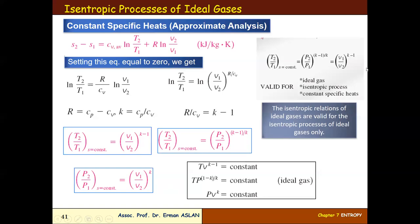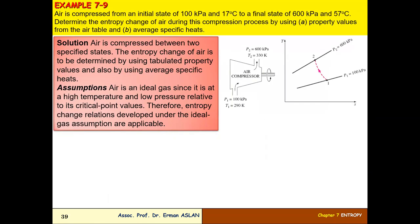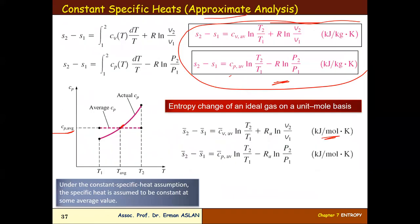We make a little review of what we did in the last lesson — now in English. Now, the isentropic process for ideal gases: we define the equation for ideal gases here.